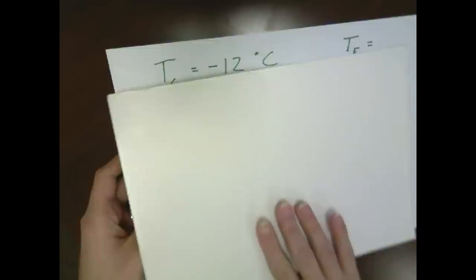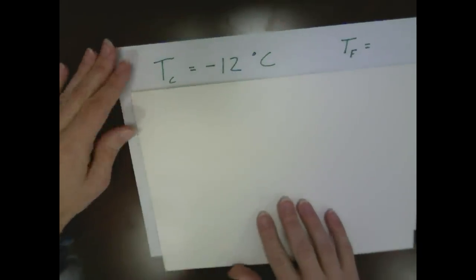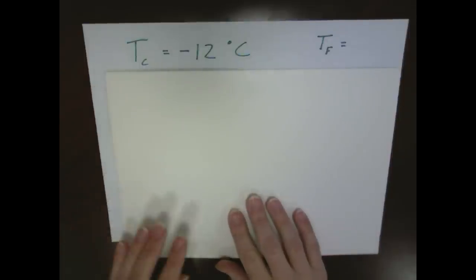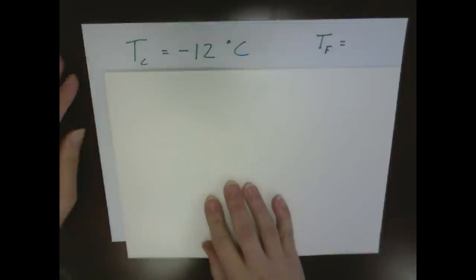For a second example, we'll look at a starting temperature in Celsius of minus 12 degrees. And we want to find that out in Fahrenheit.